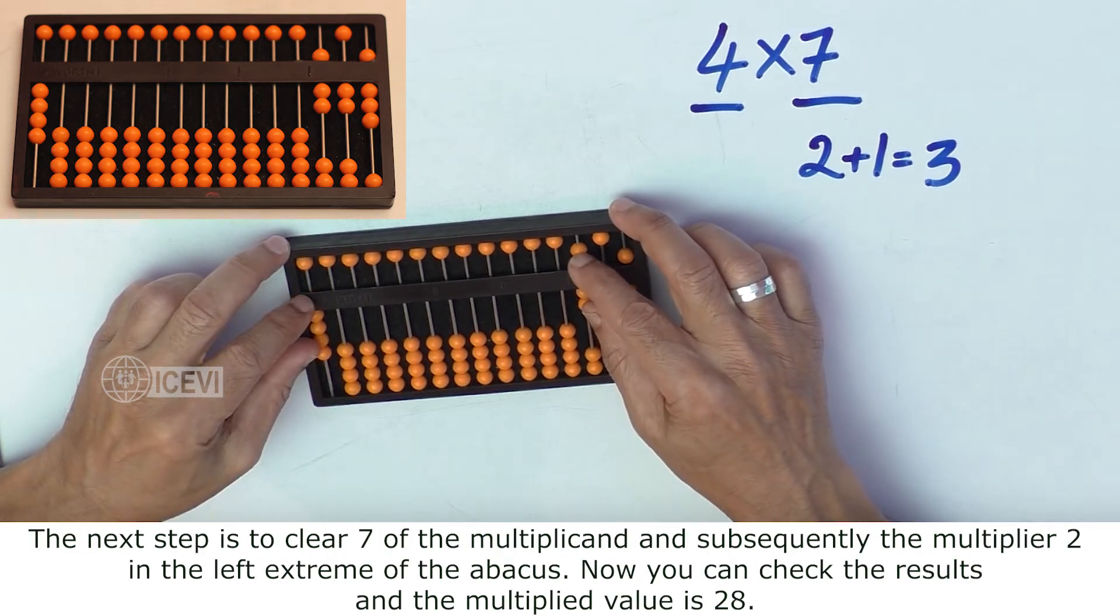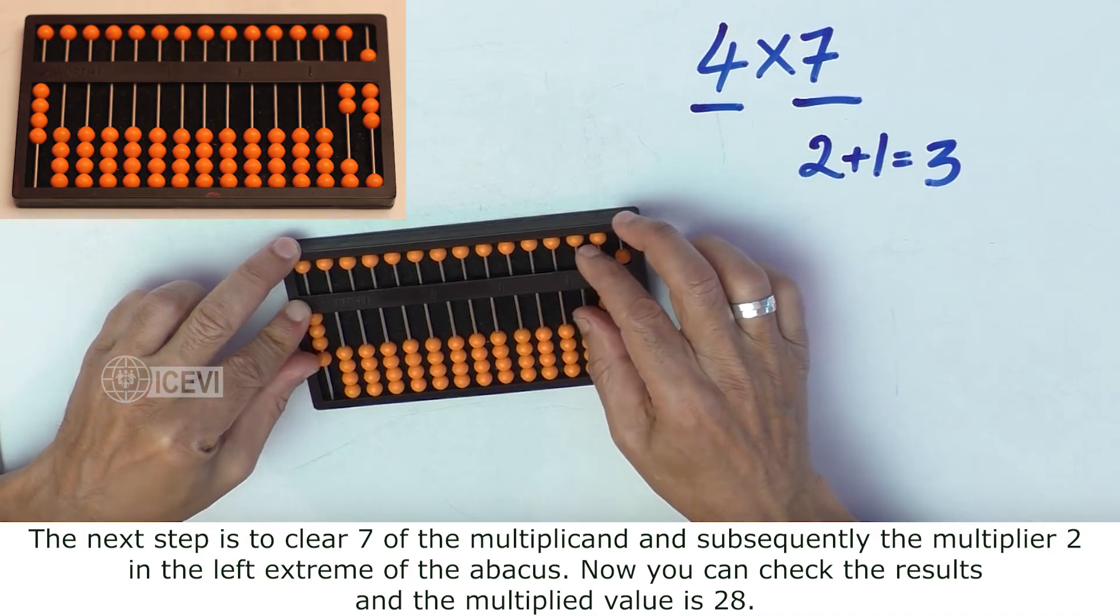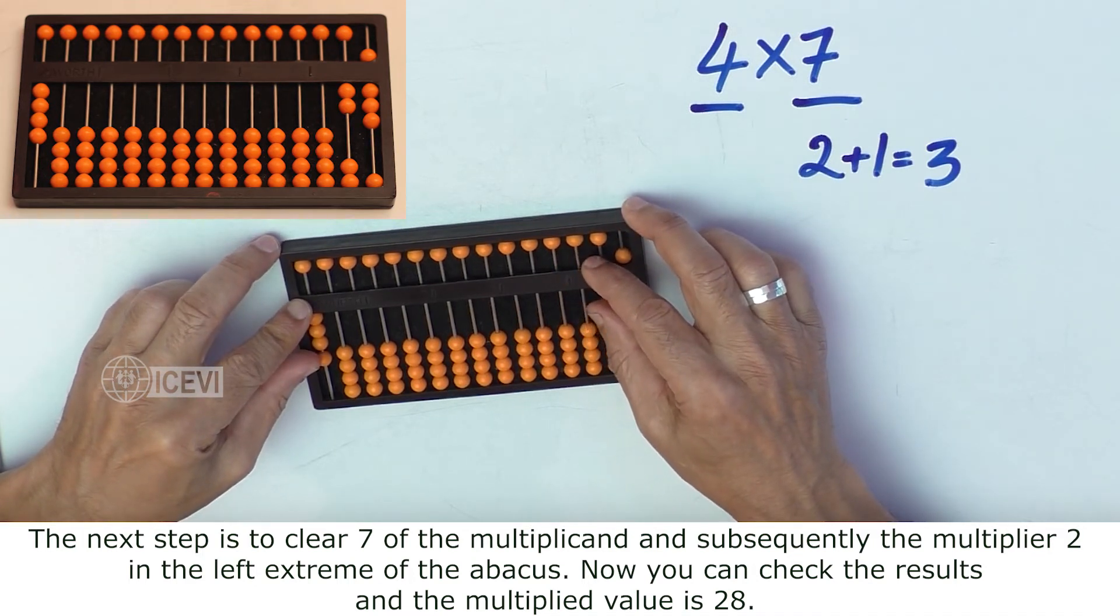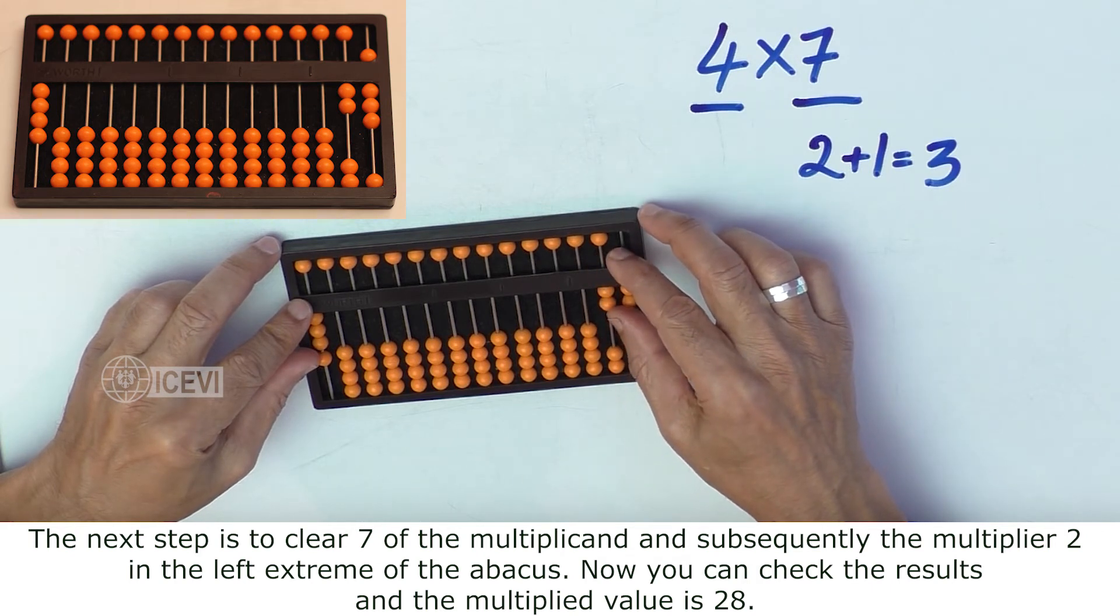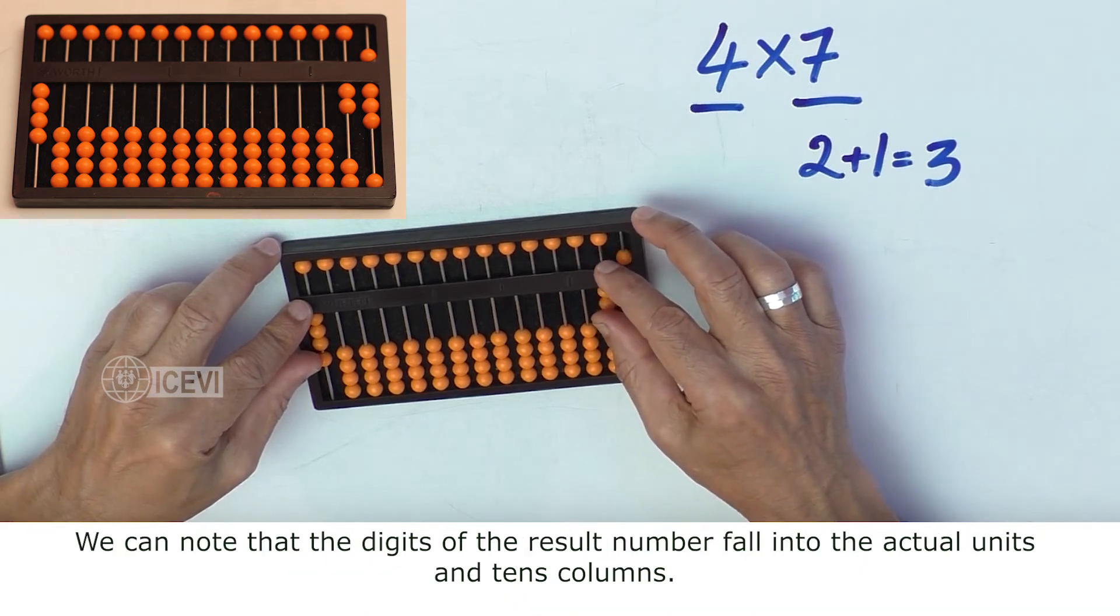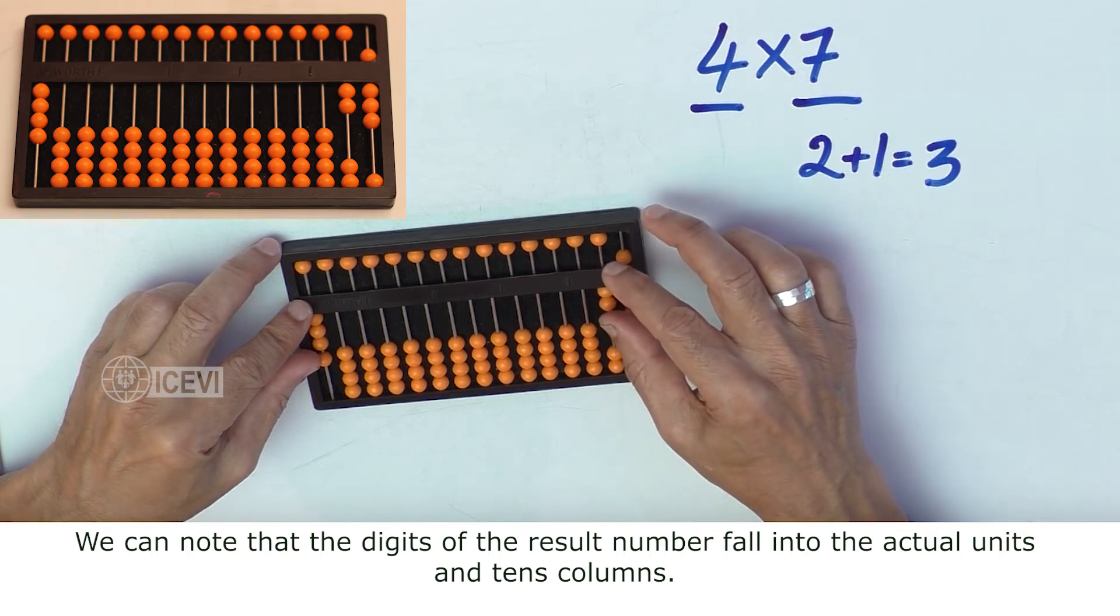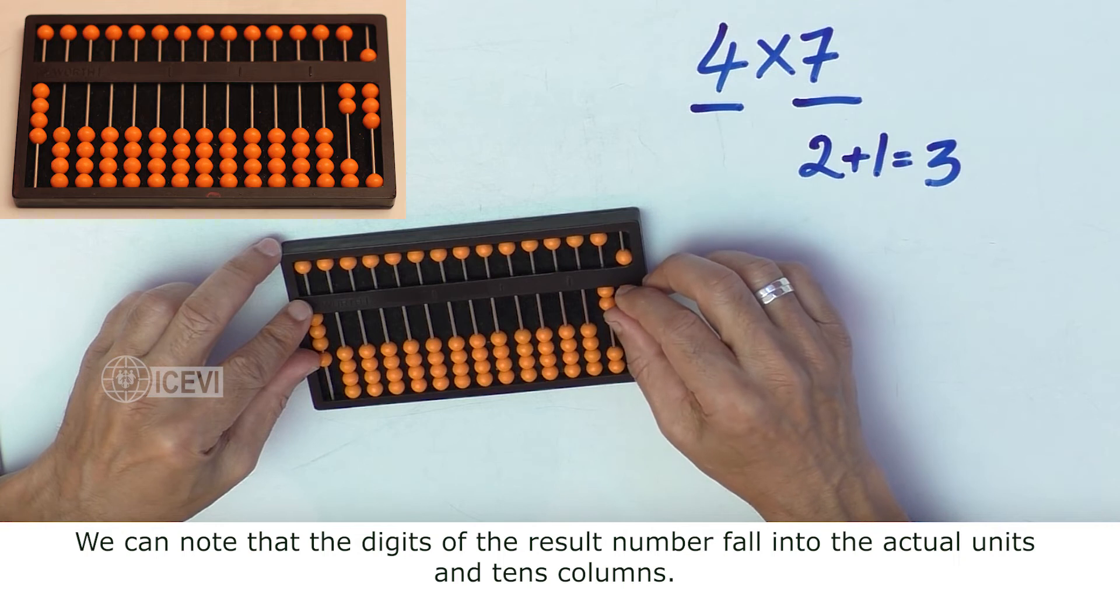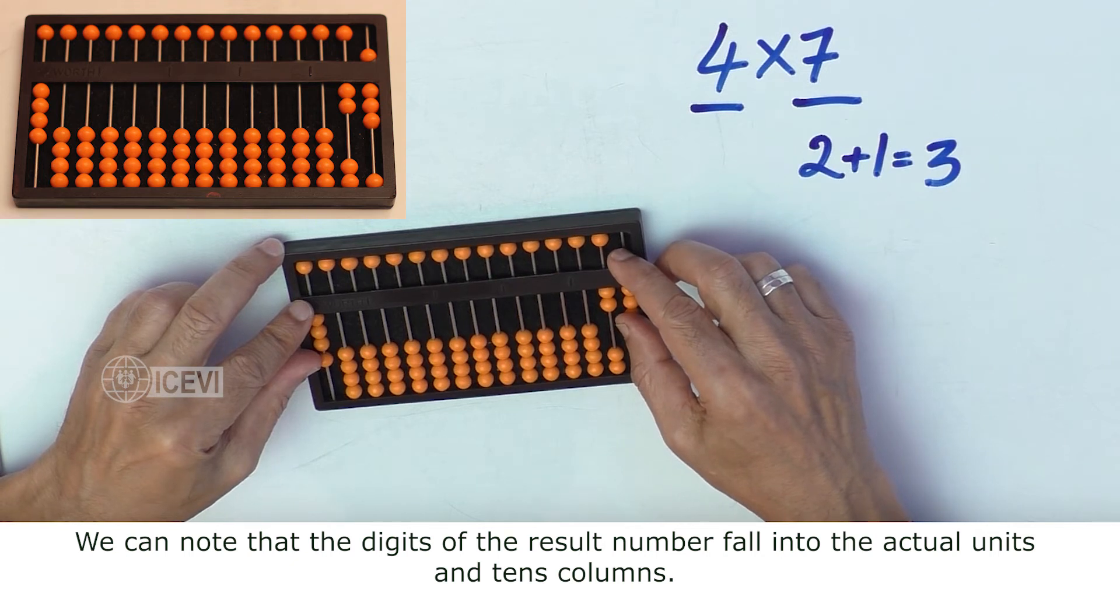The next step is to clear 7 of the multiplicand, and we get the value as 28. We can note that the digits of the result number fall into the actual units and tens columns. That is, 2 in the tens column and 8 in the units column.